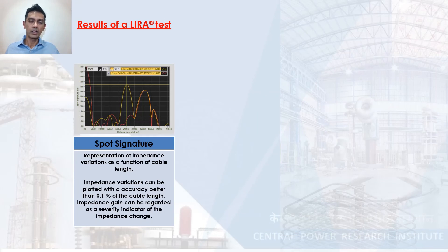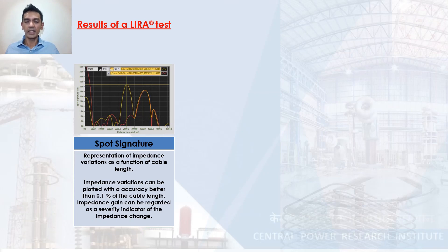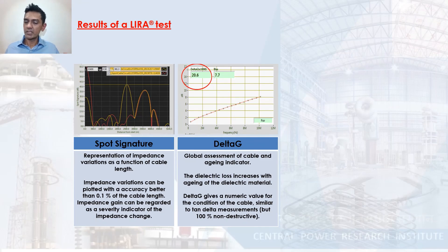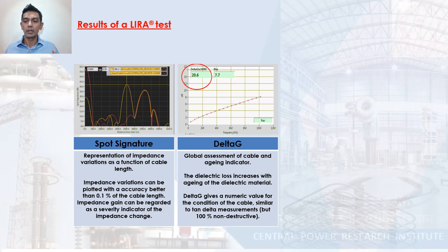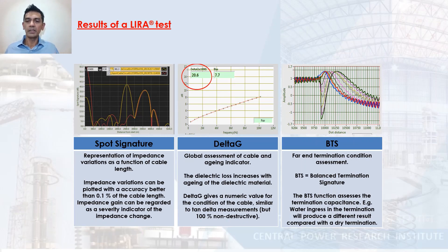Lyra derives three parameters. First, the Spot Signature, which shows the change in impedance as a function of cable length, using impedance gain to assess every point on the cable. Second, the Delta G, a parameter similar to traditional tan delta values, which gives an indication of the overall degradation and aging of the cable. Third, the Balanced Termination Signature (BTS), which indicates the condition of the cable's end termination.